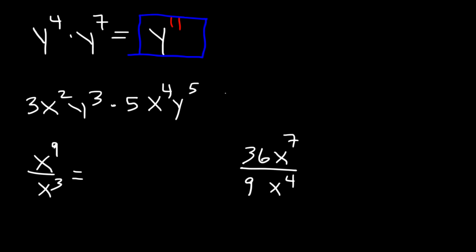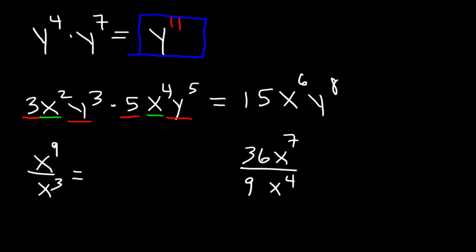Now for the second one — 3x squared y cubed times 5x to the fourth y to the fifth — the first thing you want to do is multiply 3 and 5: that's 15. Next, multiply the x variables: x squared times x to the fourth, they're common bases so we add the exponents. 2 plus 4 is 6, so it's x to the sixth. Then y cubed times y to the fifth is y to the eighth. So the answer is 15x to the sixth y to the eighth.